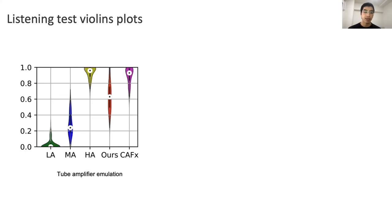For the first task, these are the results where the low anchor is an unprocessed sample. The mid-anchor is the sample processed by a static preset of a non-linear audio effect and the hidden reference as the high anchor. We also include a state-of-the-art model as baseline CAFX. The CAFX method ranks above our model, which is reasonable, considered that it corresponds to a state-of-the-art network for non-linear emulation of audio effects. But our result for this task is still remarkable.